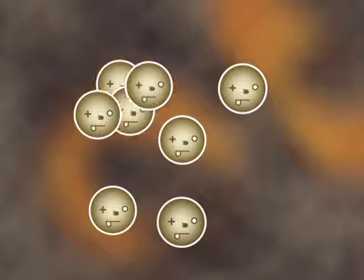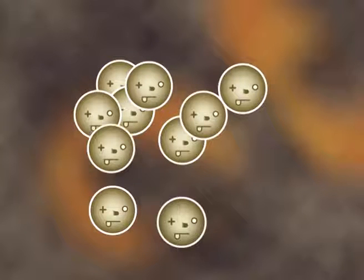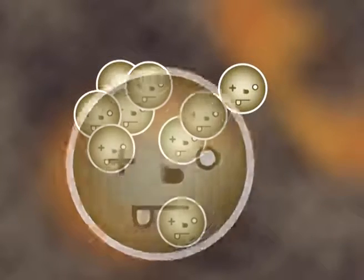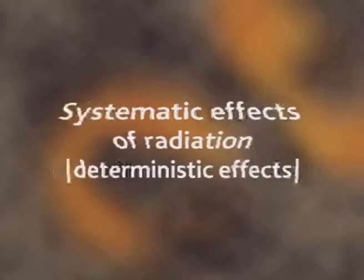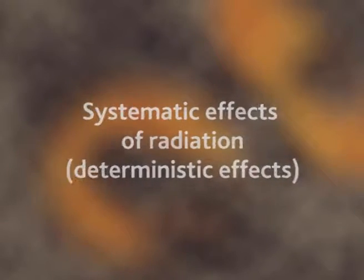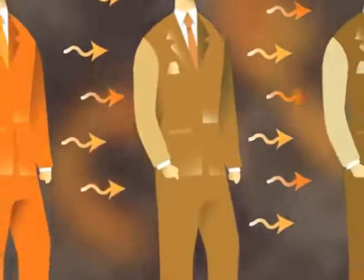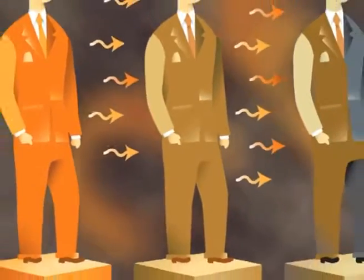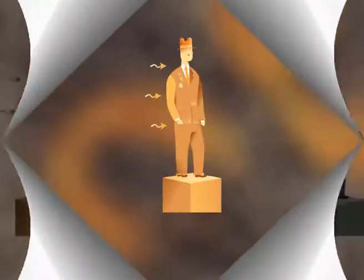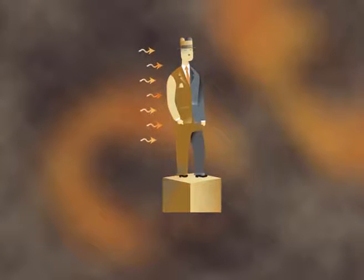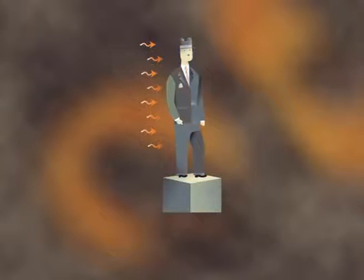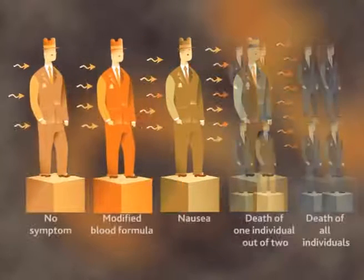If the radiation dose is high, a significant number of cells will be damaged and will die. This will involve effects which are referred to as deterministic effects. High doses generate systematic effects on the people who have been exposed. Their severity depends on the dose of exposure, on the size of the body area which has been exposed, and on the type of organs which have been affected.